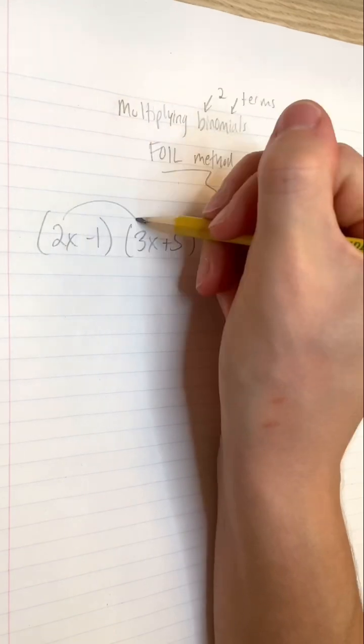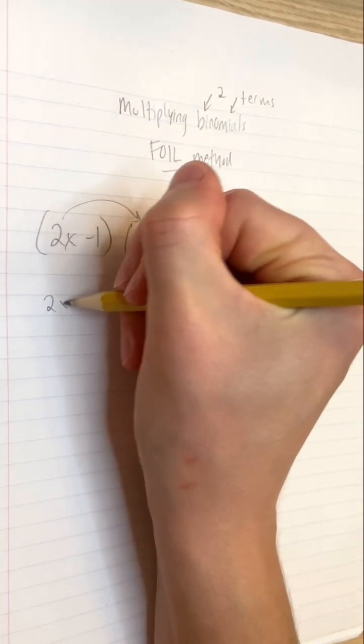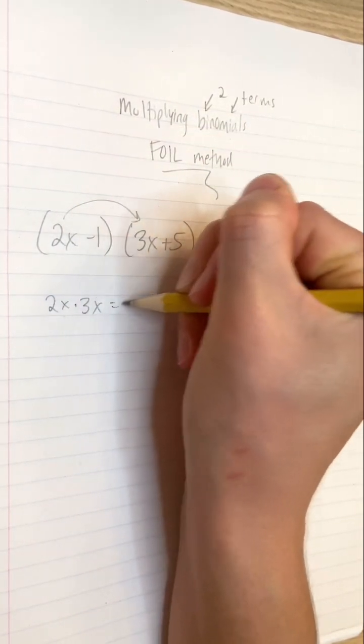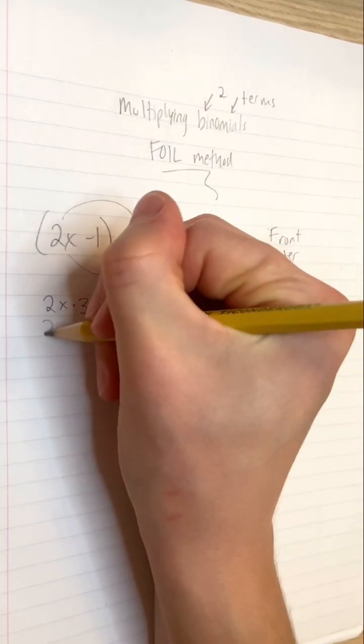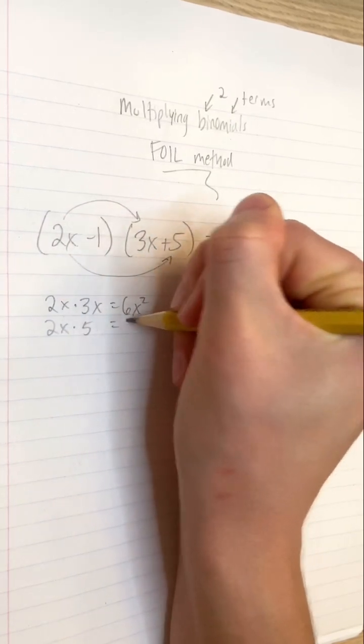The acronym FOIL tells us all of the pairs that must be multiplied under the distributive property. F stands for front. 2x times 3x is 6x squared. O stands for outer. 2x times 5 is 10x.